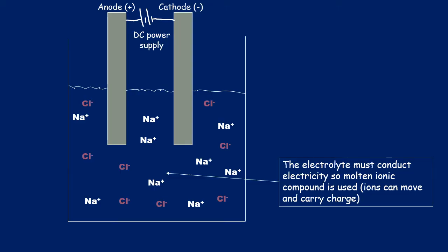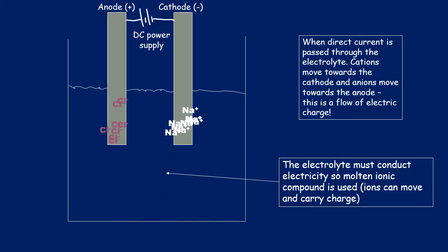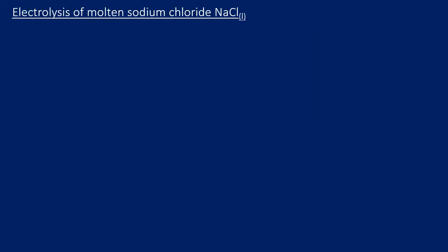The anode and cathode are connected via a direct current power supply. When that power supply is turned on, the cations move towards the cathode and the anions move towards the anode. The cathode is negative, so positive ions are attracted to it; the anode is positive, so negative ions are attracted to it. Let's look more closely at what happens at each electrode.